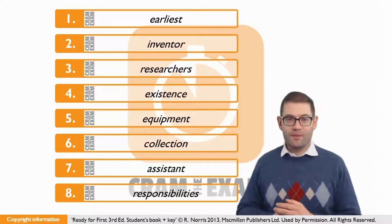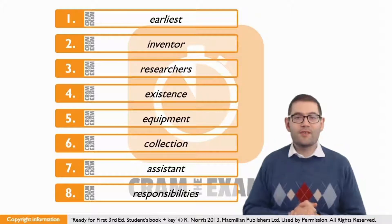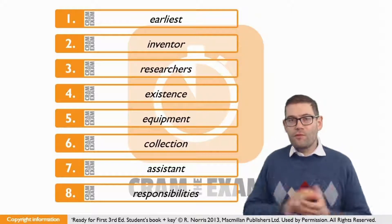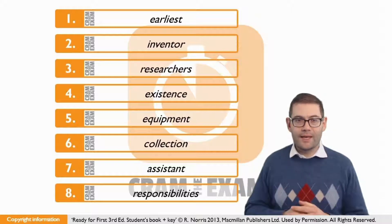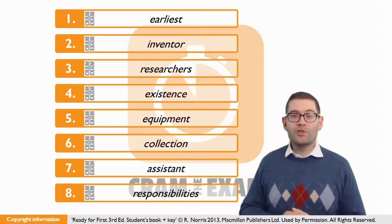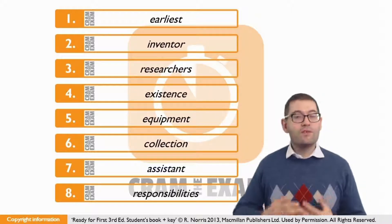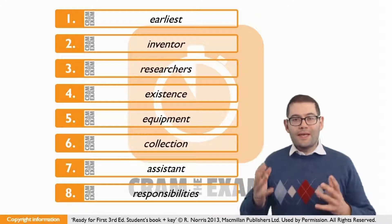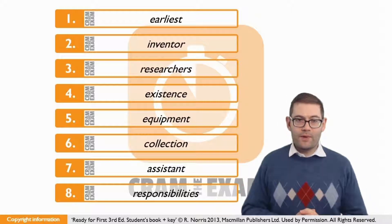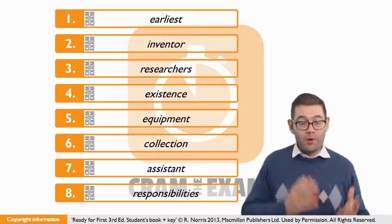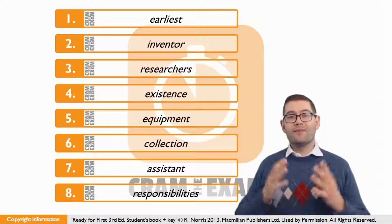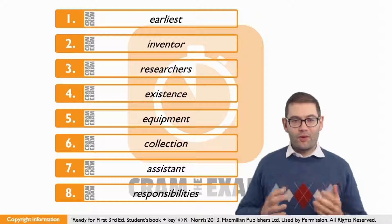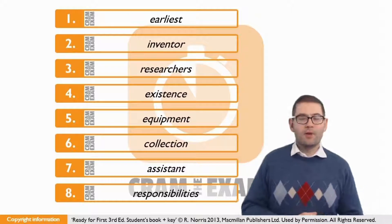Question number three — a few language patterns to be aware of. First, 'used by' is always going to be followed by a noun, and in most cases it's going to be a personal noun. That's of course what we need here. If we look at the context before the gap, we've got two adjectives that modify the missing noun. The noun we need is a plural personal noun — 'researchers.'